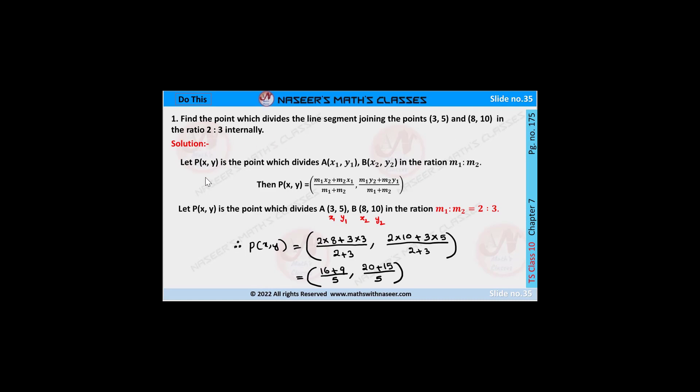Let the required point P divide A and B in the ratio m1 to m2.